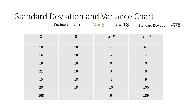To find our standard deviation, we must square root the variance. The standard deviation is 6.09918. The variance is 37.2 and the standard deviation is 6.09918.